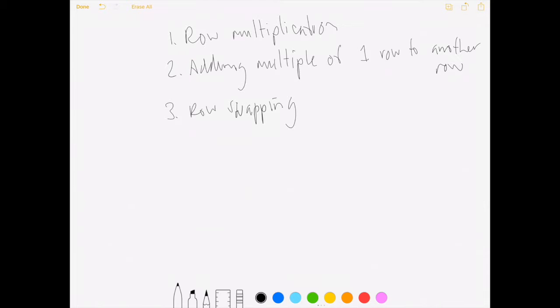So by repeated application of these three operations, that is, by repeated multiplication by elementary matrices to both sides of the equation AX equals B, we transform the system into CX equals D, where C is just a bunch of these elementary matrices applied to A, and that's in our upper triangular form.